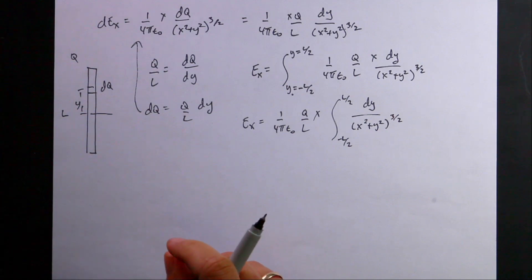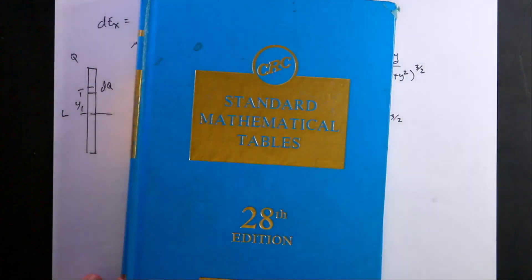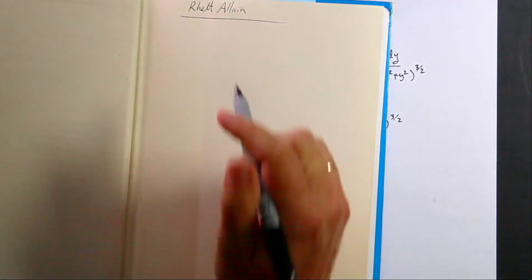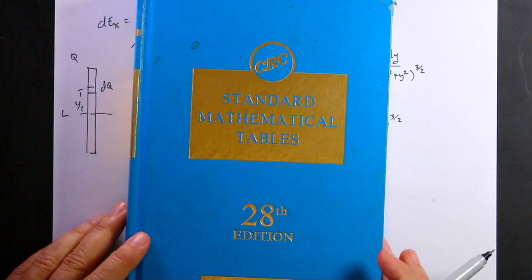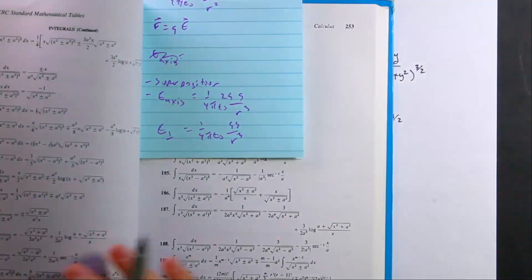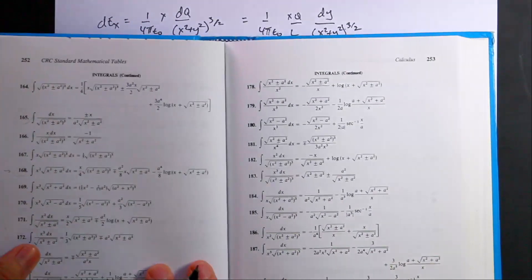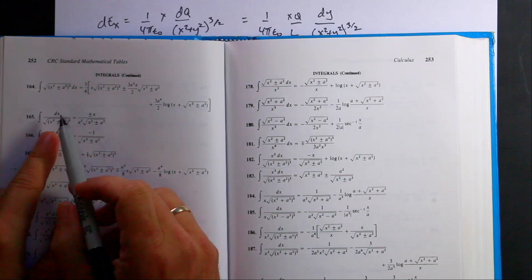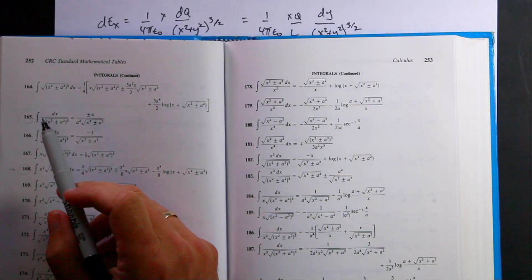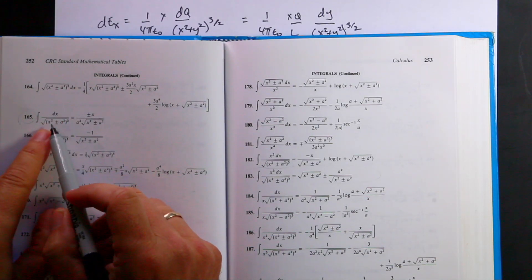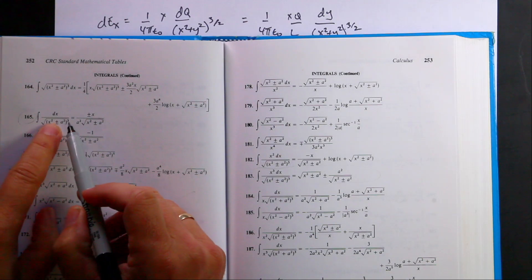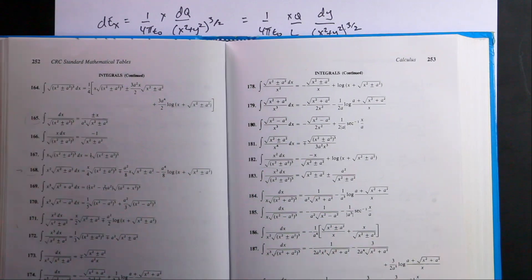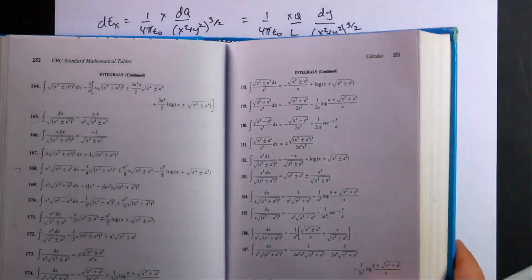I don't remember how to integrate that off the top of my head — and that's fine, because this is physics, not math, and I'm going to use my CRC math tables. Here is the relevant integral form: the integral of DY / (Y² + A²)^(3/2) equals Y / (A² * sqrt(Y² + A²)). In our case, A² = X².